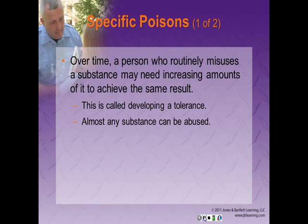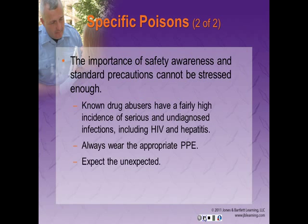Regarding specific poisons: a person who routinely misuses a substance may need increasing amounts to achieve the same result — this is called developing a tolerance. If there is an overwhelming desire or need to continue using the substance with a tendency to increase the dose, this is an addiction. The importance of safety awareness and standard precautions in caring for drug abuse victims cannot be stressed enough. Known drug abusers have a high incidence of serious undiagnosed infections, including HIV and hepatitis. Always wear appropriate PPE — remember, the drug user, not the drug, can pose the greatest threat.